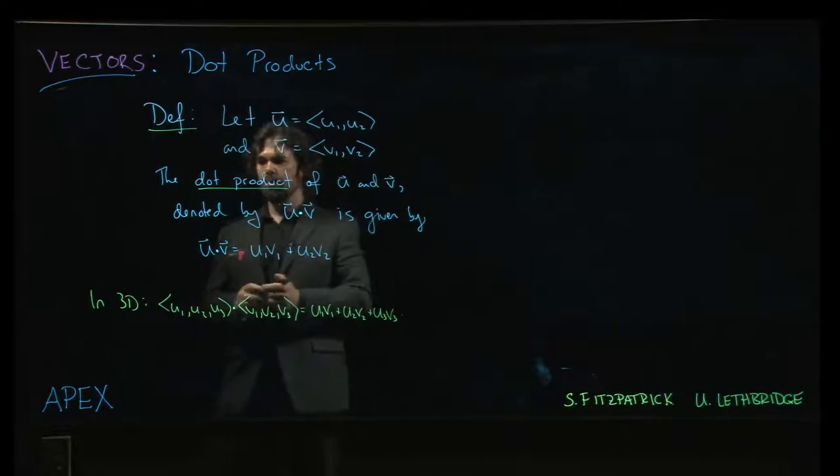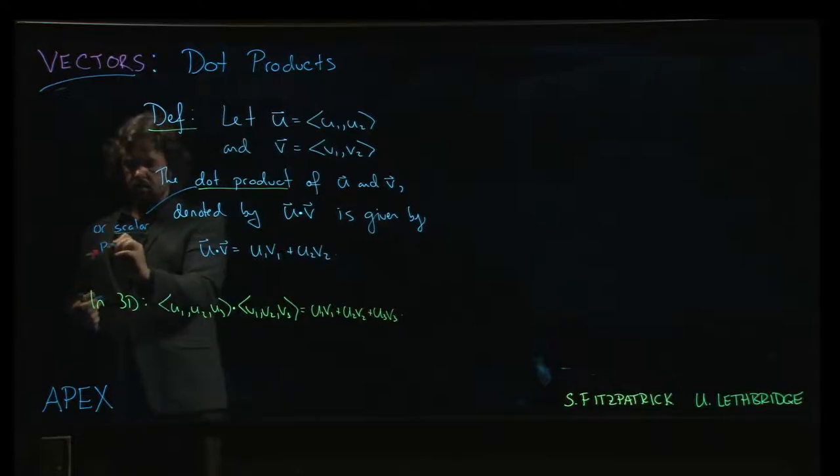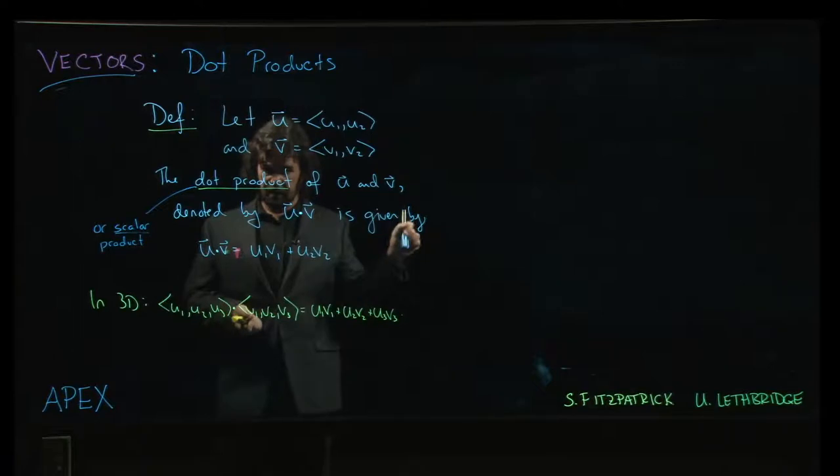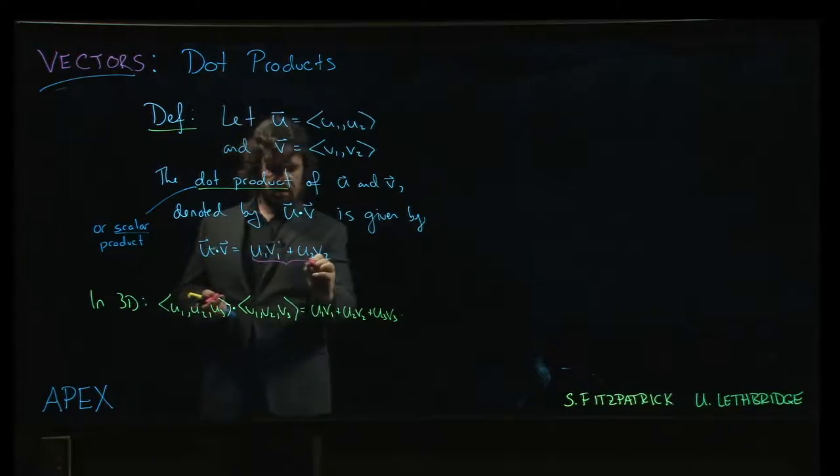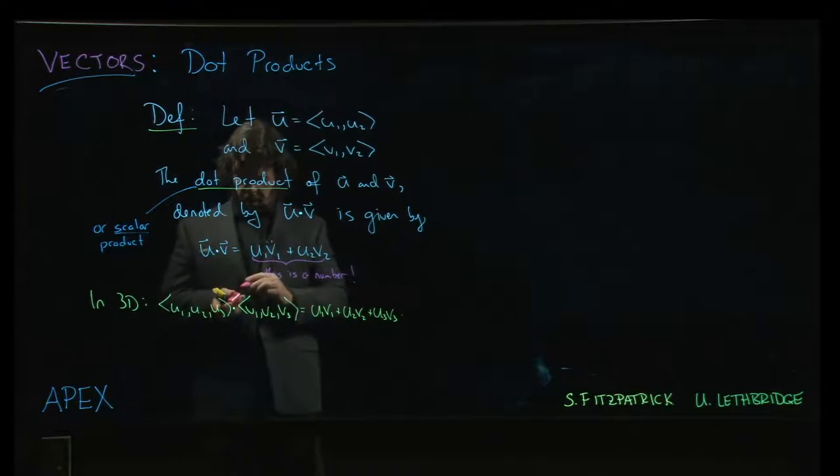Now, this is also sometimes called the scalar product. Why? Because the result is a scalar. We're going to see that there's also another type of product that produces a vector in the next section called the cross product. Make sure you keep that in mind. This output here, this is a number. It's not a vector.